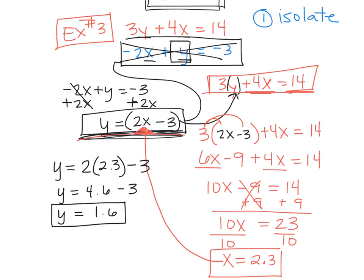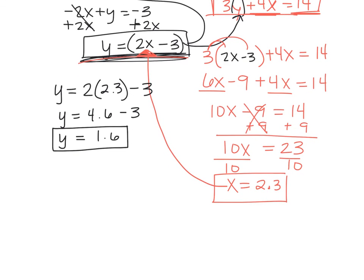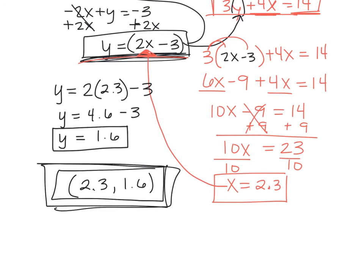What's your answer to the problem? The solution to this system. How do you write your answer on these? Just like when we graphed. How did you write your answer? Two lines meet at a point. You put it in parentheses. So your X value is 2.3 and your Y value is 1.6. So your answer to the question is that: 2.3 comma 1.6.